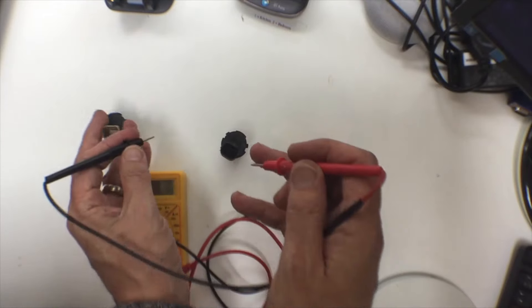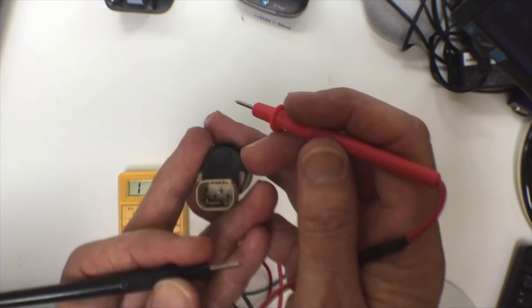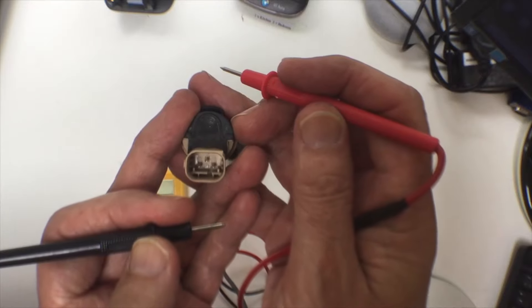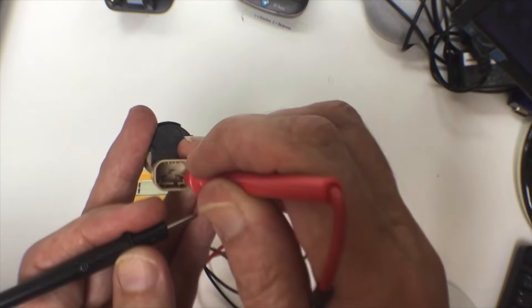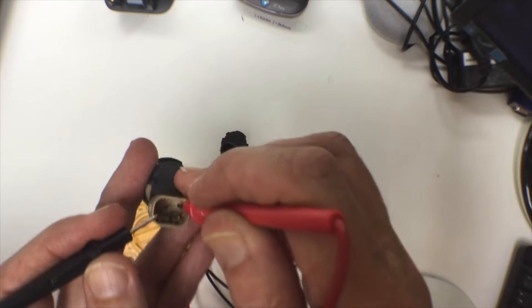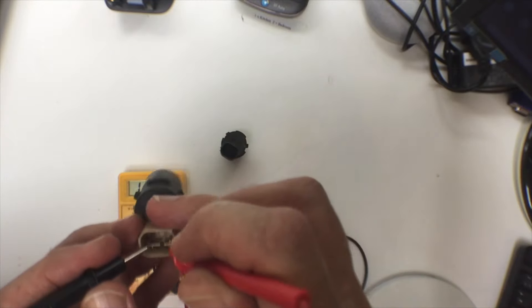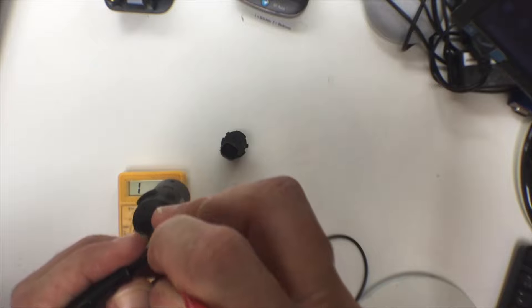If we were to test either of these sensors on the lower setting, like 20K for example, we just get open circuit. Again, you can see the pins more clearly with the beige plastic, but if we put the red on pin one and the black on pin two...